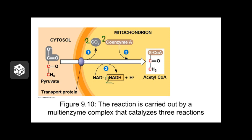Remember that through this reaction, because it runs twice, we have to double the numbers of all our molecules. So from two pyruvates we get two acetyl-CoAs, two NADHs, and two CO2s.